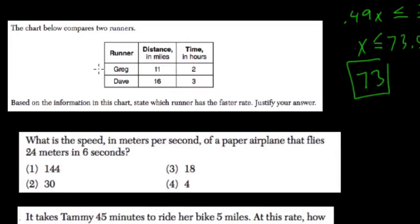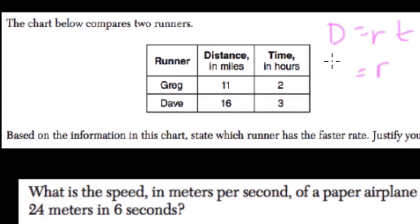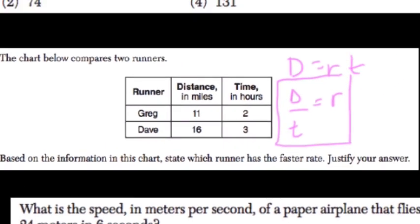The chart below compares two runners, Greg and Dave, to see who has the faster rate. Distance equals rate times time, so rate equals distance divided by time. We'll use this to find the higher number.